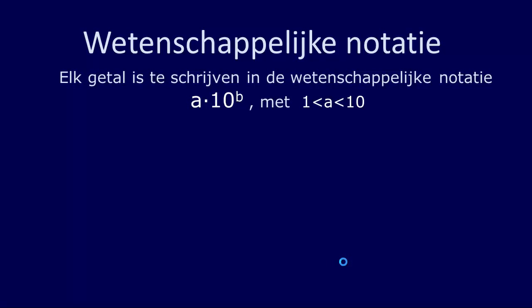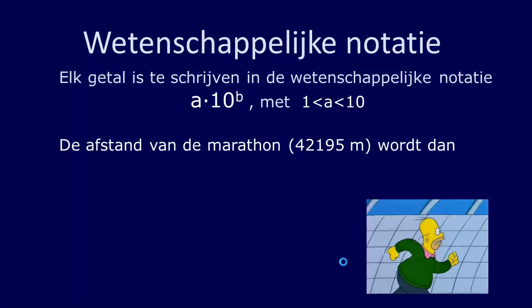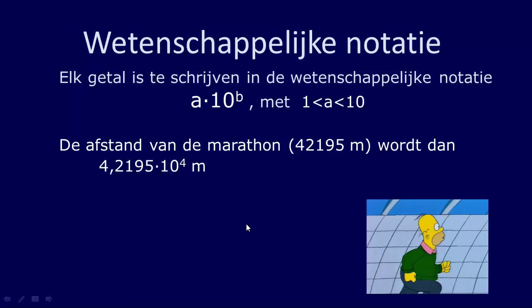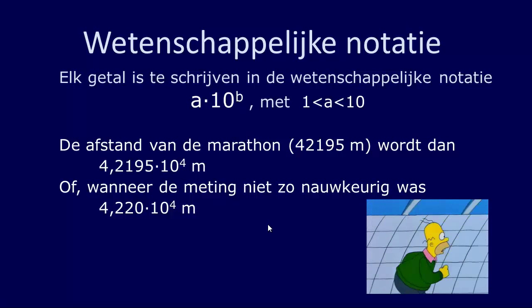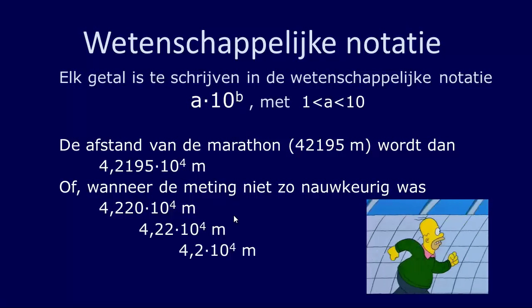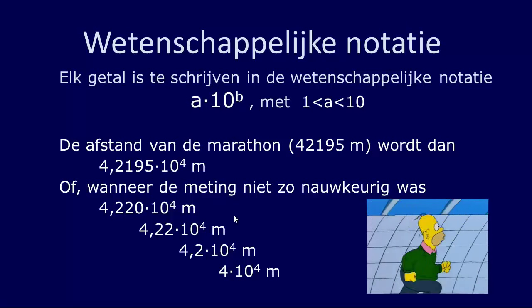Deze wetenschappelijke notatie heeft ook nog een tweede grote voordeel. Stel bijvoorbeeld je wil de afstand van een marathon weergeven. Die afstand is 42.195 meter. Als je dit in wetenschappelijke notatie opschrijft, dan wordt dat 4,2195 maal 10 tot de macht 4 meter. Maar stel dat je je meting niet zo nauwkeurig hebt gedaan en je mag dus niet zoveel significante cijfers gebruiken. Dan kun je het opschrijven als 4,220 maal 10 tot de macht 4, of 4,22, of 4,2, of zelfs 4 maal 10 tot de macht 4 meter. Een groot voordeel is dat je elke meetwaarde kunt noteren in elke gewenste hoeveelheid significante cijfers.